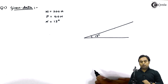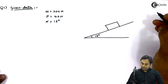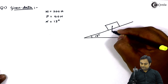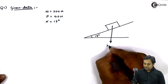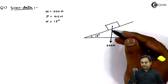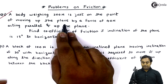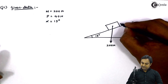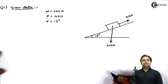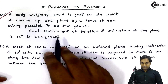Over this inclined plane there is a body kept, which has a weight of 200 Newton. I am showing the body in the form of a block. The weight of 200 Newton acts vertically downwards. There is also a force of 40 Newton moving the block in the upward direction along the plane. The question asks us to find the coefficient of friction.